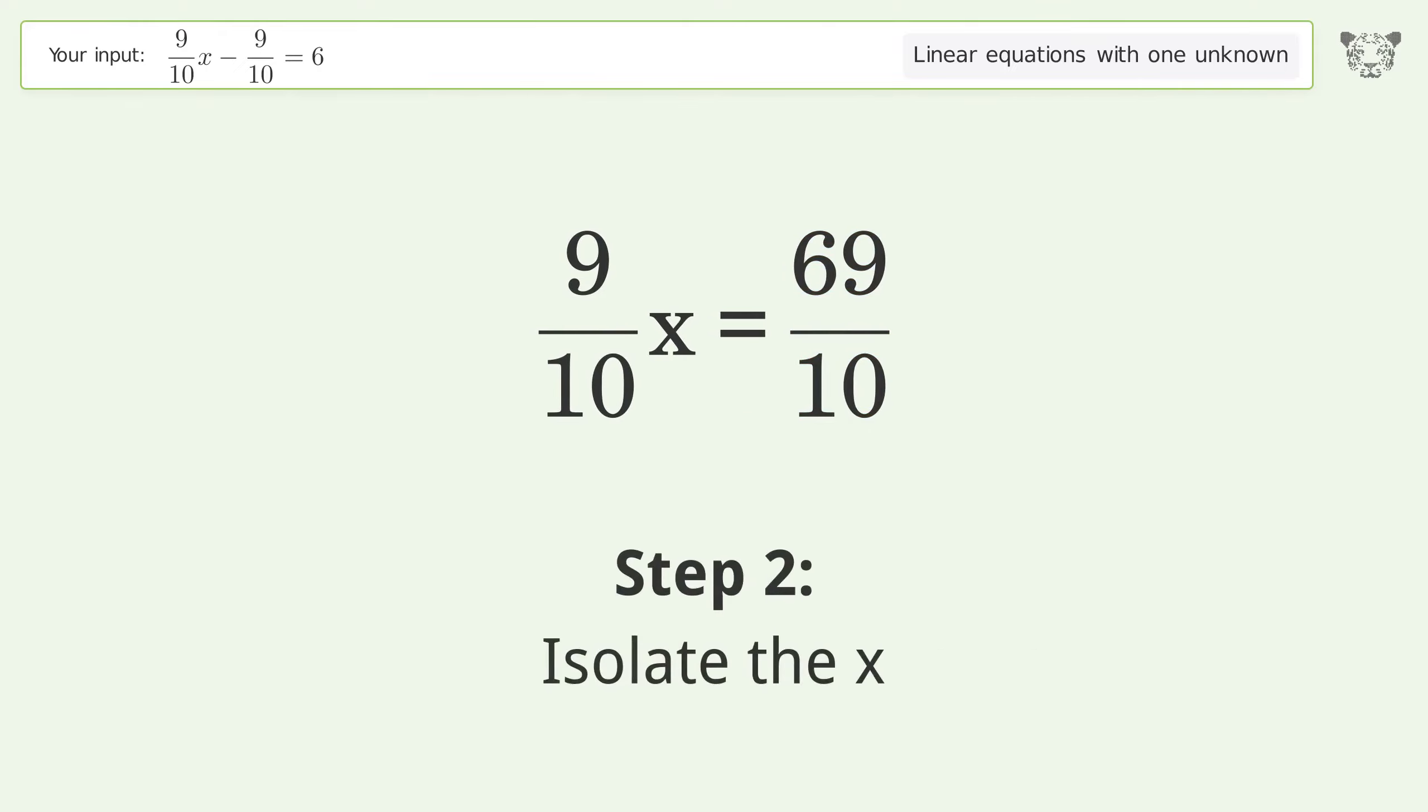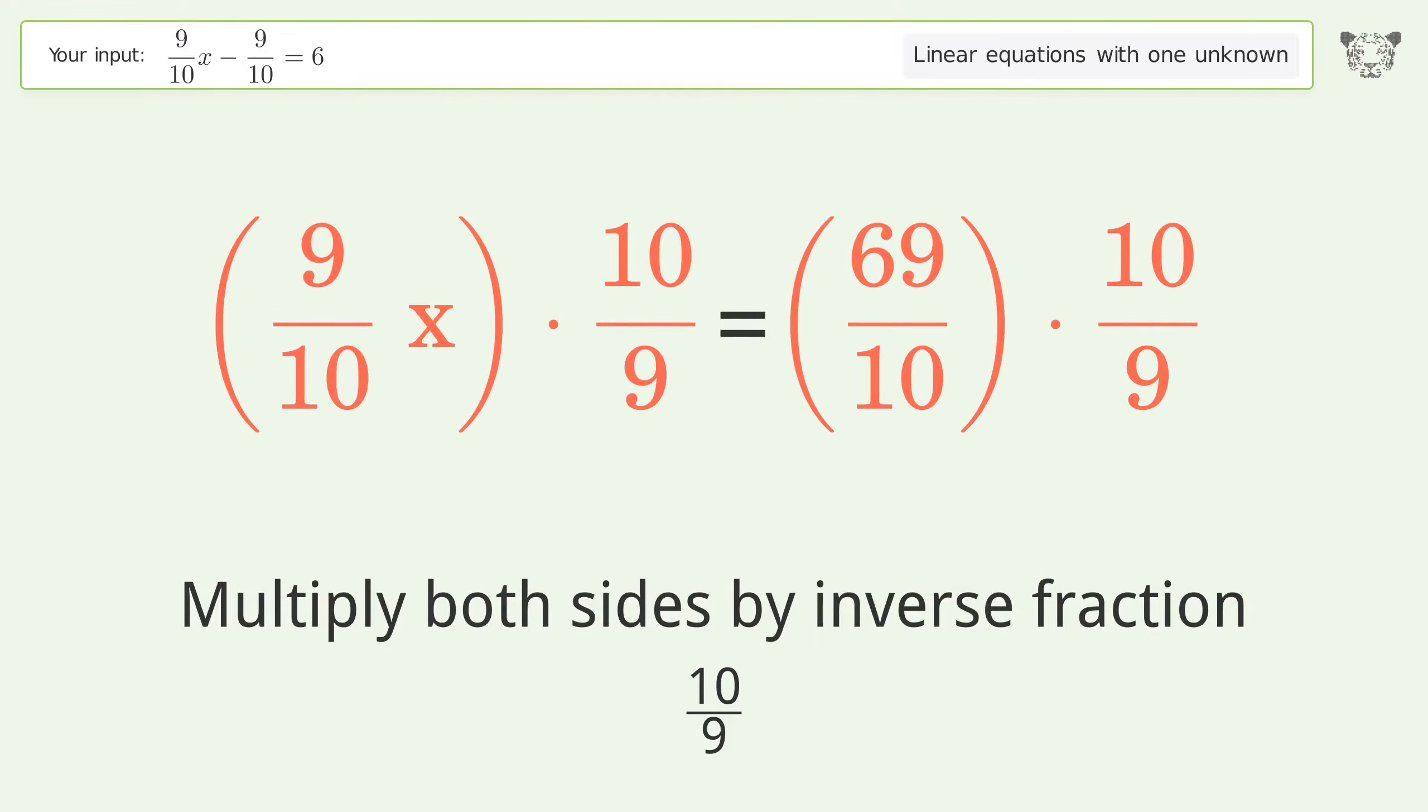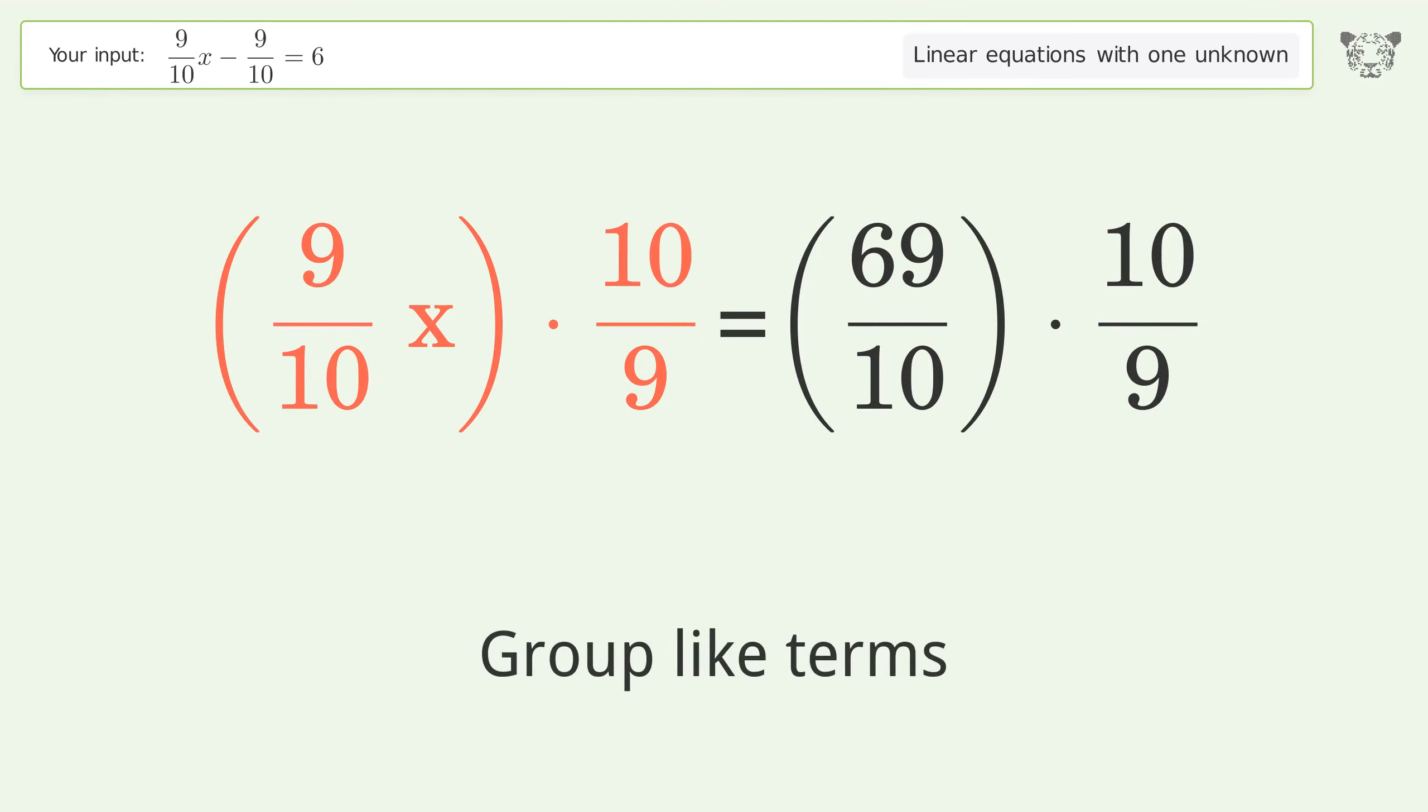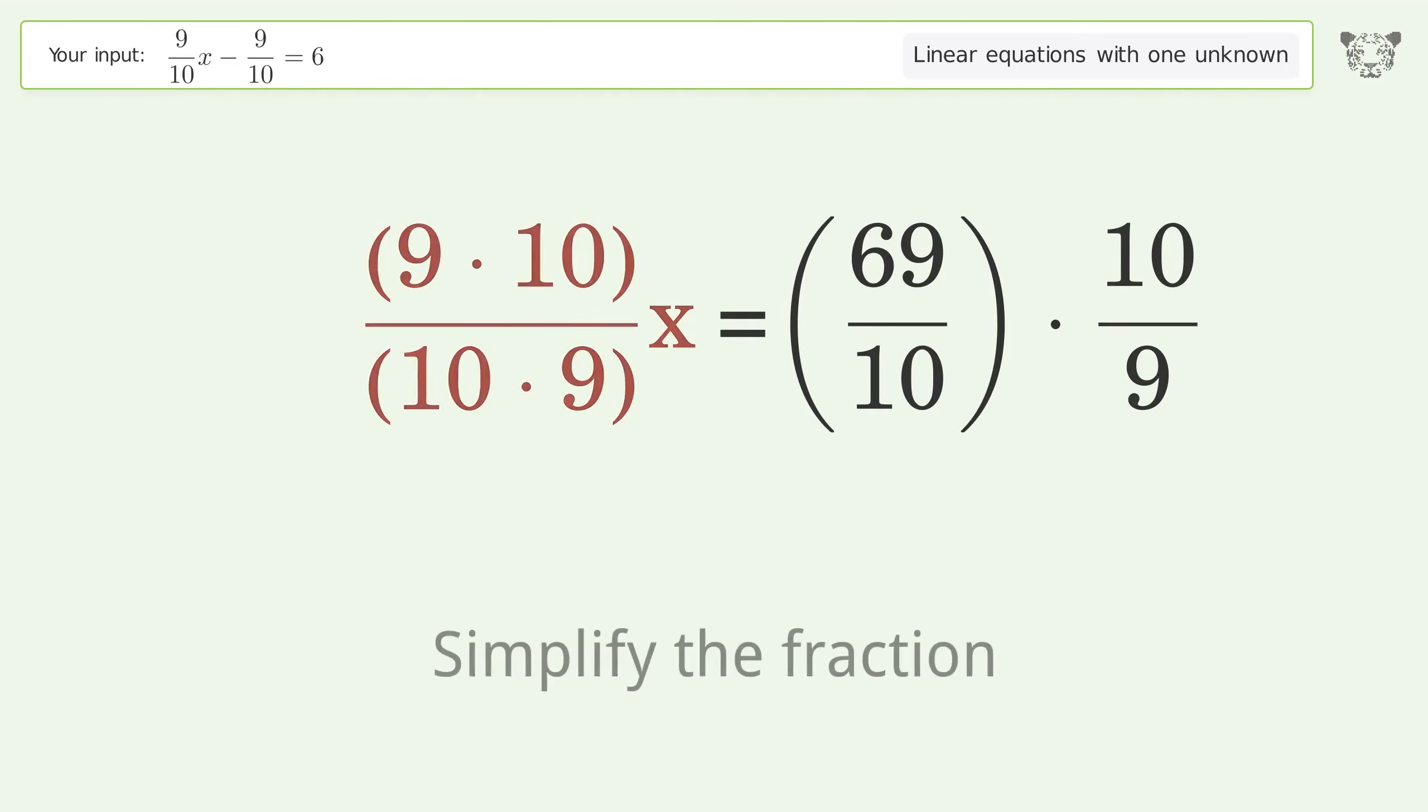Isolate the x. Multiply both sides by the inverse fraction 10 over 9. Group like terms. Multiply the coefficients. Simplify the fraction.